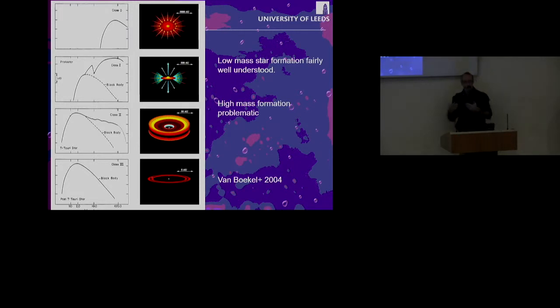For low-mass stars, we know how the material is going from the disk to the star via magnetospheric accretion through the magnetic field lines. But for massive stars, we have no idea. We do know that they're not magnetic, so there must be something else going on.